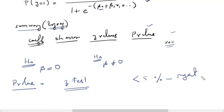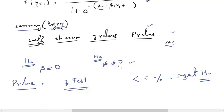If the p-value is below 5%, we reject the null hypothesis and say that beta is not equal to zero. Hence, we get a significant value of beta — whatever beta we obtain from the logistic regression, we consider that to be the actual coefficient and not zero. If beta is not equal to zero, it means the variable is significant for the model.